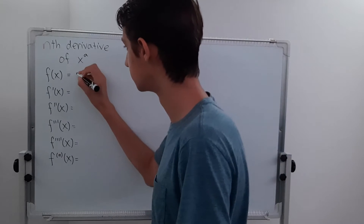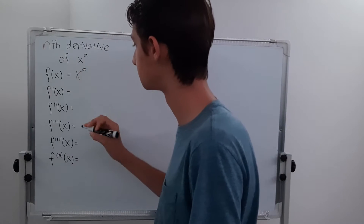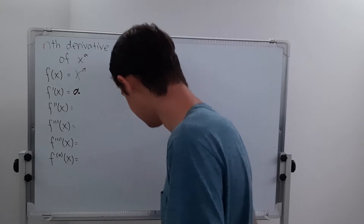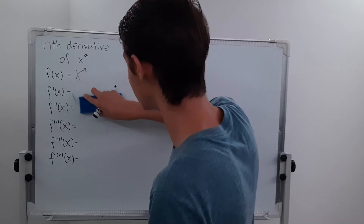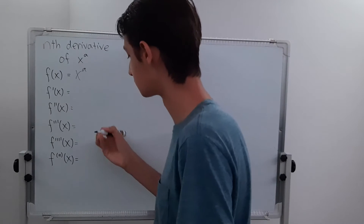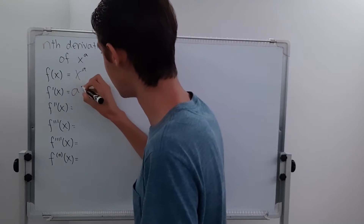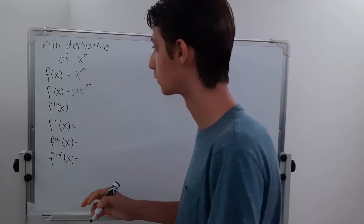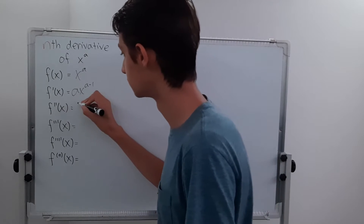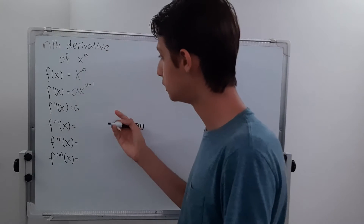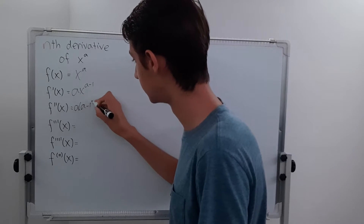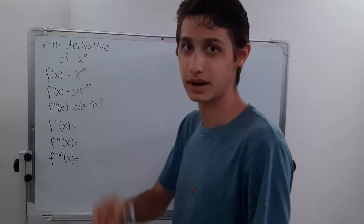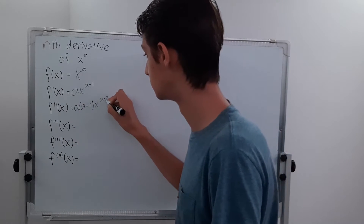Our original function is just x to the a. Our first derivative is going to be ax to the a minus 1 — just our standard power rule. Now a is a coefficient, so we leave it there, and our new exponent is a minus 1, so we multiply it down. Then for the second derivative, we multiply by a minus 1, and our exponent becomes a minus 1 minus 1, which is a minus 2.